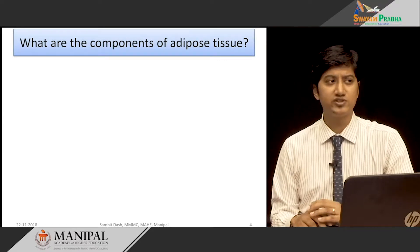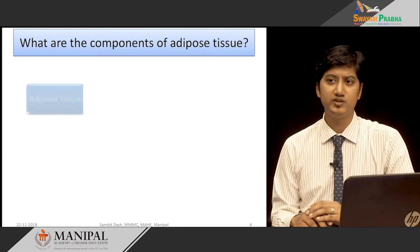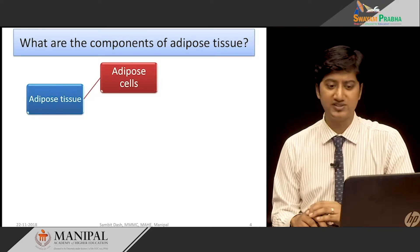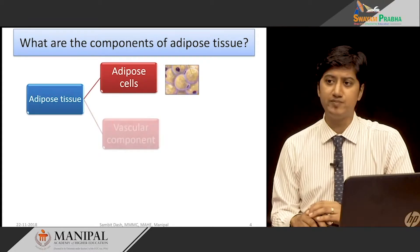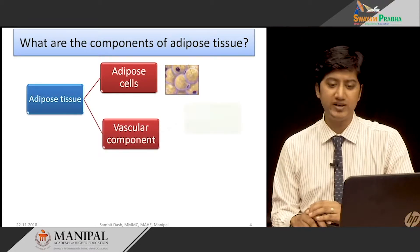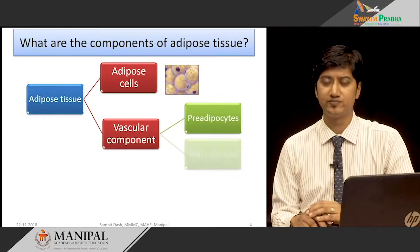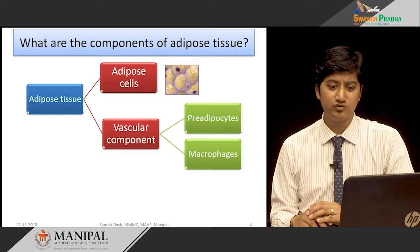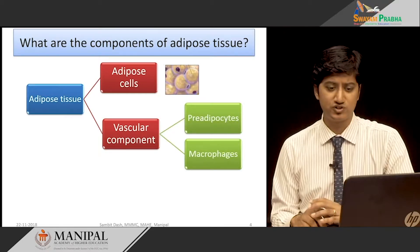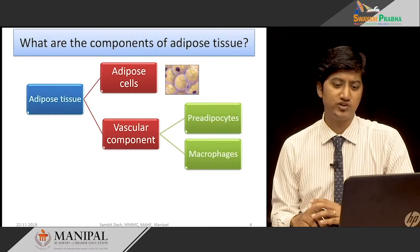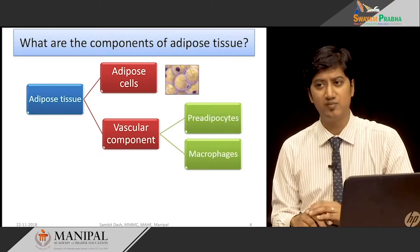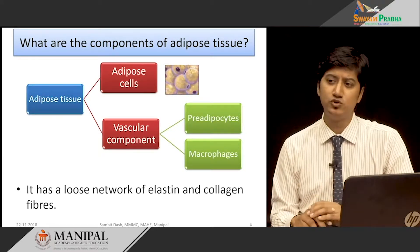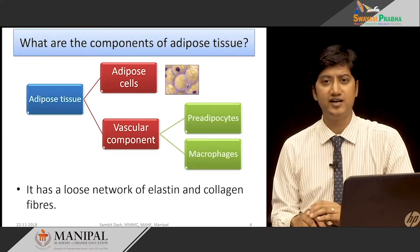What are the components of adipose tissue? The adipose tissue comprises lipid-storing adipose cells and a vascular compartment which includes pre-adipocytes and macrophages. To give you an overall idea, in a 70 kg man, the white adipose tissue weighs around 14 kg, which is almost half the muscle mass. The adipose tissue has a loose network of elastin and collagen fibers.